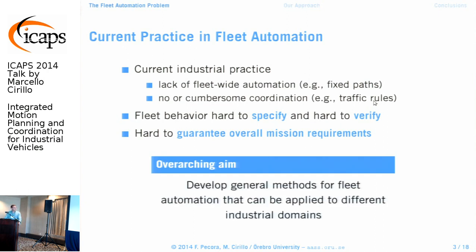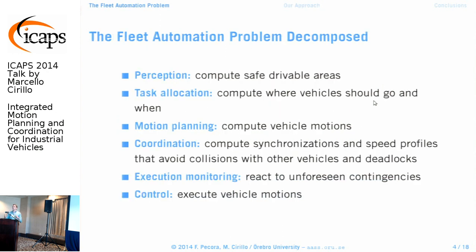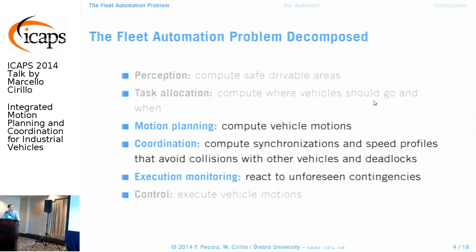The aim of this project is to develop general methods for fleet automation that can be applied to different industrial domains. We decompose the fleet automation problem into six modules: perception, task allocation, motion planning, overall coordination, execution monitoring, and low-level control. These should not be seen as a strict sequence — perception is needed both initially and at execution time. In this talk, we focus on motion planning, coordination, and execution monitoring and their interaction.